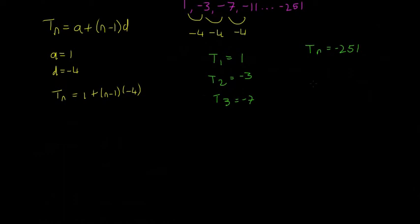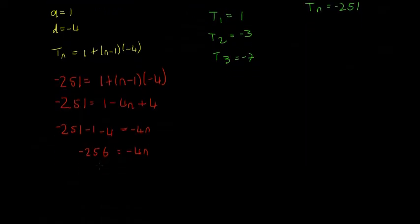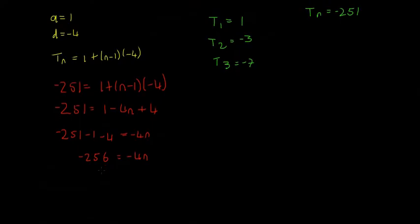So: minus 251 = 1 + (n − 1)(−4). Expanding: minus 251 = 1 − 4n + 4. Moving all the numbers to one side: minus 251 − 1 − 4 = minus 4n, giving minus 256 = minus 4n. Dividing both sides by minus 4: n = 64.